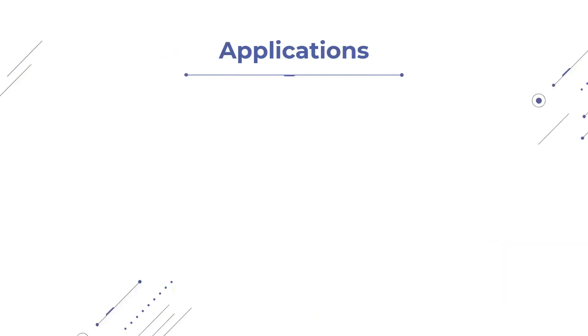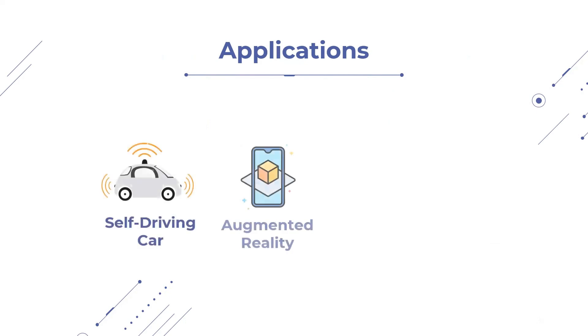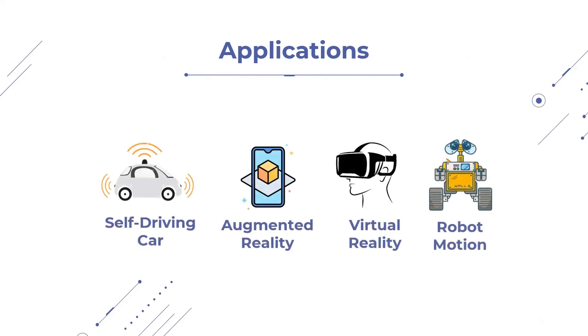Both depth and semantics are widely used together in a wide range of fields, for instance, autonomous vehicles, augmented reality, virtual reality, and robot motion, because both of these features jointly can provide a better perception of the world.